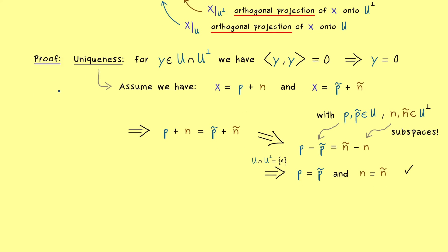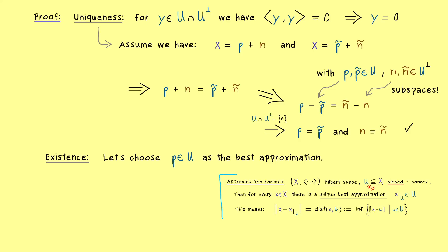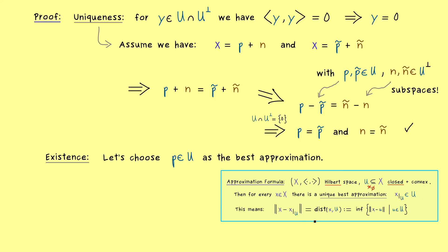The next step is showing the existence of the orthogonal projection. Here we can finally use our approximation formula. We choose p as the best approximation given by the approximation formula. We have a Hilbert space and a closed subspace — so definitely a closed convex set — and the theorem gives us exactly one element in u, which we call p. What we have to show is that the element x minus p is orthogonal to u, i.e., it lies in the orthogonal complement of u. We call this vector n.